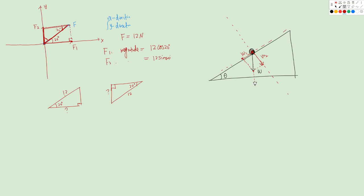If this angle is theta, and since W is vertically downward, this angle here is 90 minus theta. We call it alpha, so alpha equals 90 minus theta. Looking at the triangle, alpha plus beta equals 90 degrees, so beta equals theta. Therefore, w2's magnitude equals W times cosine beta, and w1's magnitude equals W times sine beta.